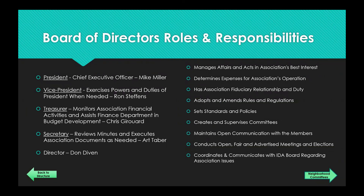You have your Board of Directors, which has five members. The president is the chief executive officer — that is Mike Miller. The vice president exercises any powers and duties for the president when needed — that's Ron. The treasurer monitors financial activities and assists the Finance Department in budget development — that is Chris Girard. The secretary reviews minutes and executes any association documents that need to be signed. And there is a director, Don Diven. Also, Mr. Girard, Mr. Tabor, and Mr. Miller are on the line for the presentation.